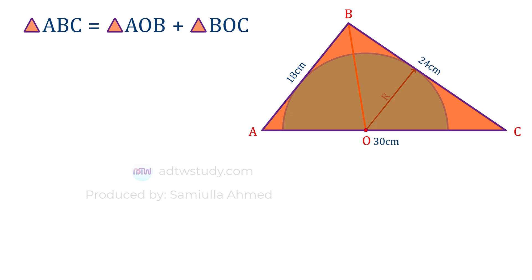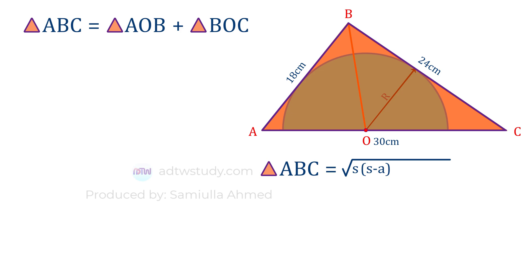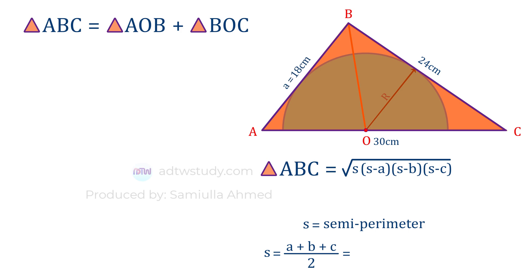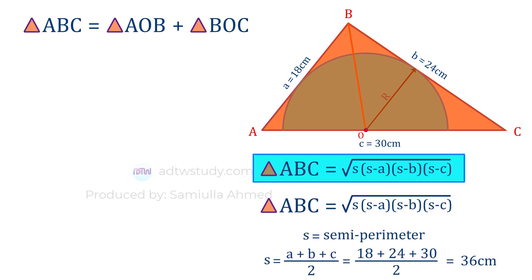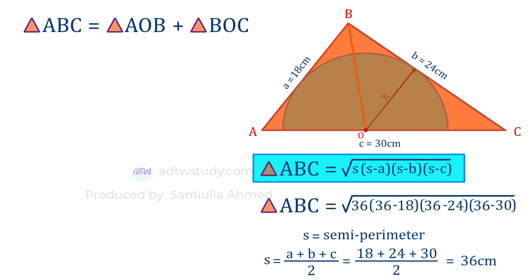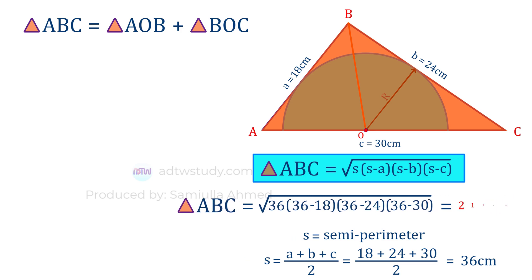Finding the area of triangle ABC — since we only know the lengths of the sides, we will use Heron's formula: square root of s(s−a)(s−b)(s−c), where s is the semi-perimeter given by the summation of all sides divided by two. Here a, b, and c are the side lengths. Putting in the values, we get s = 36. Then applying the formula, the area of the triangle is 216 square centimeters.